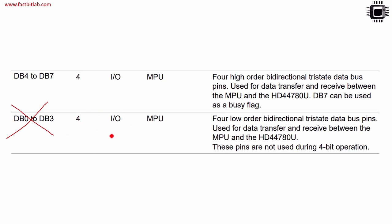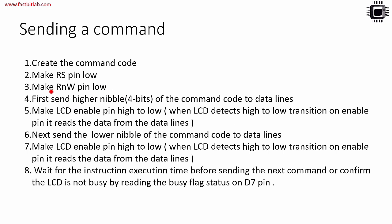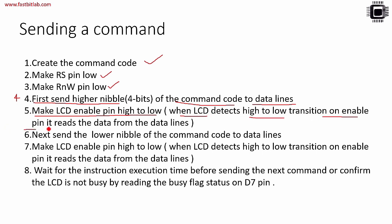This picture is taken from the datasheet - you can learn more about these data pins there. To send a command: first create a command code, then make the RS pin low because you are sending a command. The read/write pin should be low because you are writing into the LCD. After that, first send the higher nibble - the higher 4 bits of the command code - to the data lines. Then make the LCD enable pin high to low. When the LCD detects a high-to-low transition on the enable pin, it reads the data from the data lines. This step is very important.